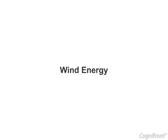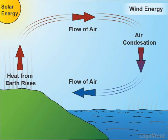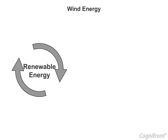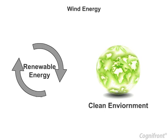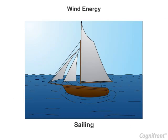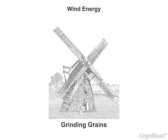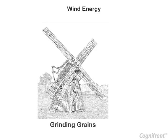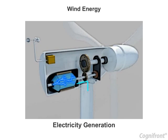Wind energy is the form of solar energy which is produced because of the uneven heating of the earth by the sun. Wind energy is renewable energy and it helps to keep the environment clean. Wind energy can be used for sailing, grinding grains, electricity generation, etc.